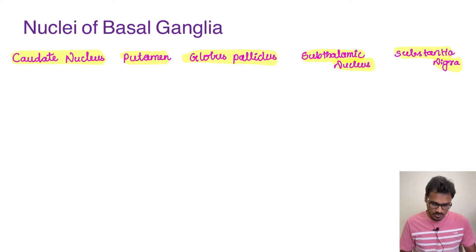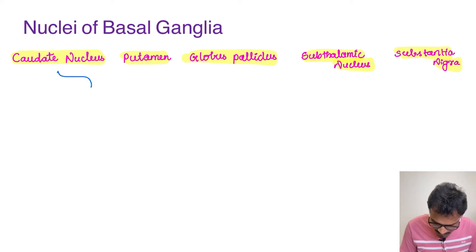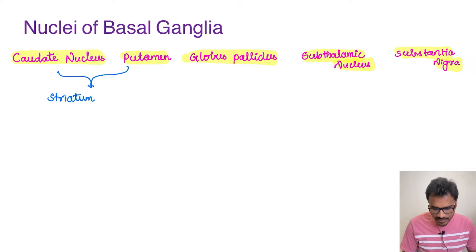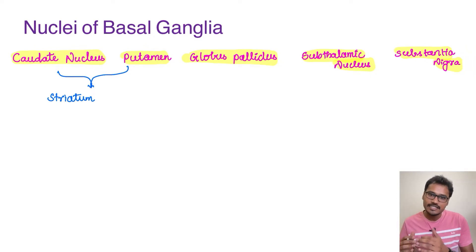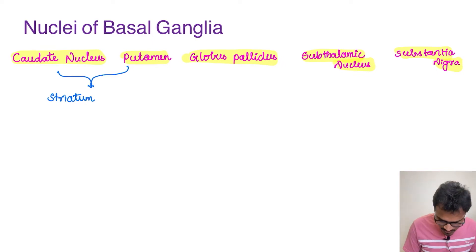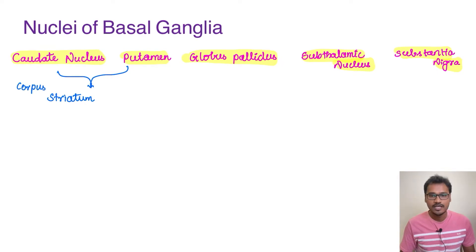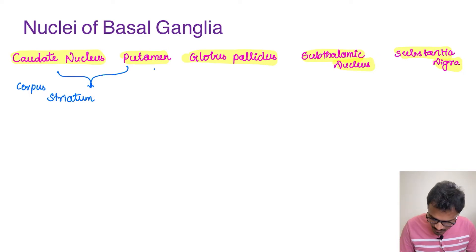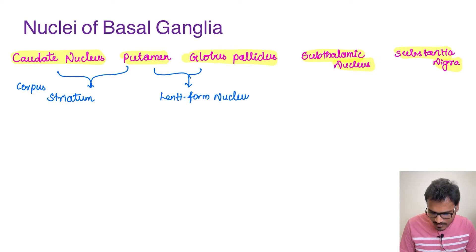We also study these nuclei in groups. The caudate nucleus and the putamen together are given the name 'striatum.' It is called striatum because the striated internal capsule passes between these two, giving them a striated appearance — hence 'corpus striatum' or simply 'striatum.' Putamen and globus pallidus are very close to each other and look like a lens, so these two nuclei are grouped together and called the 'lentiform nucleus.'